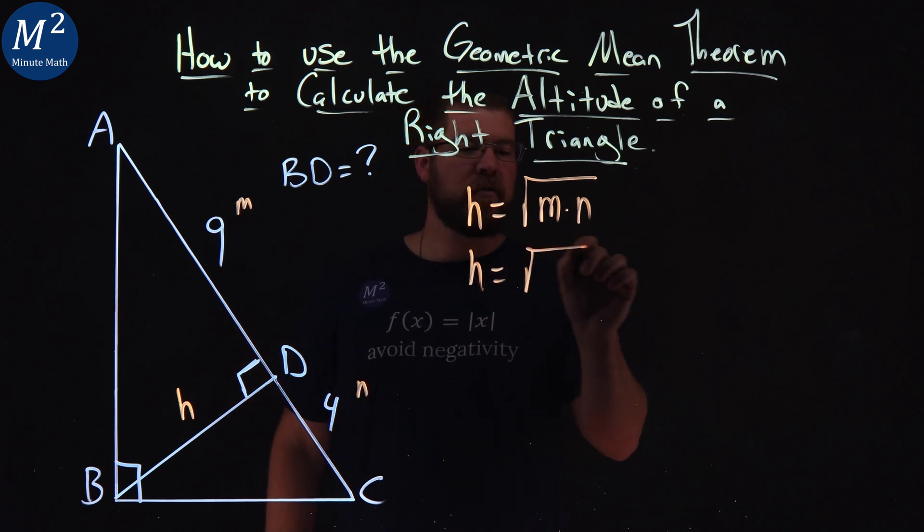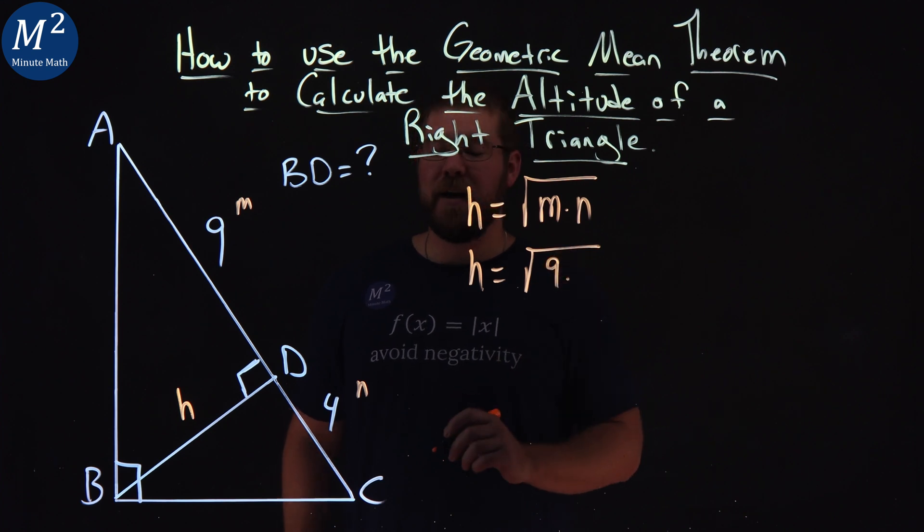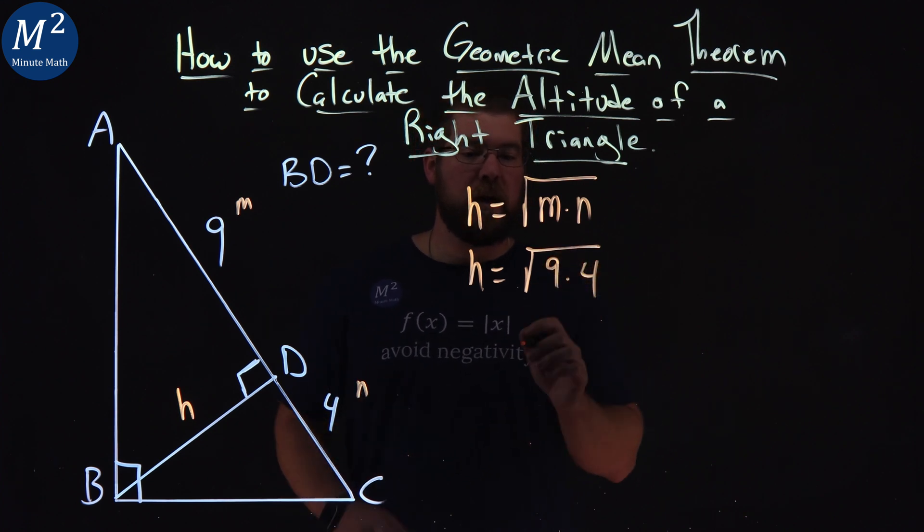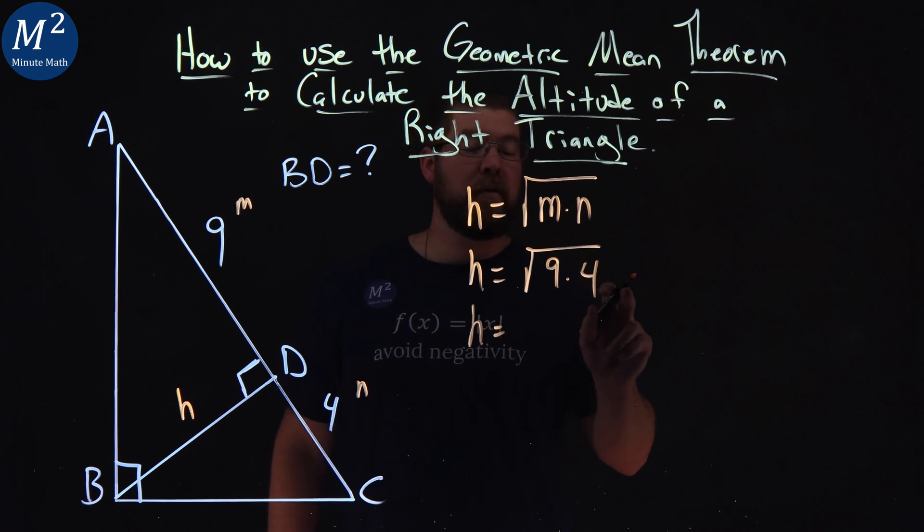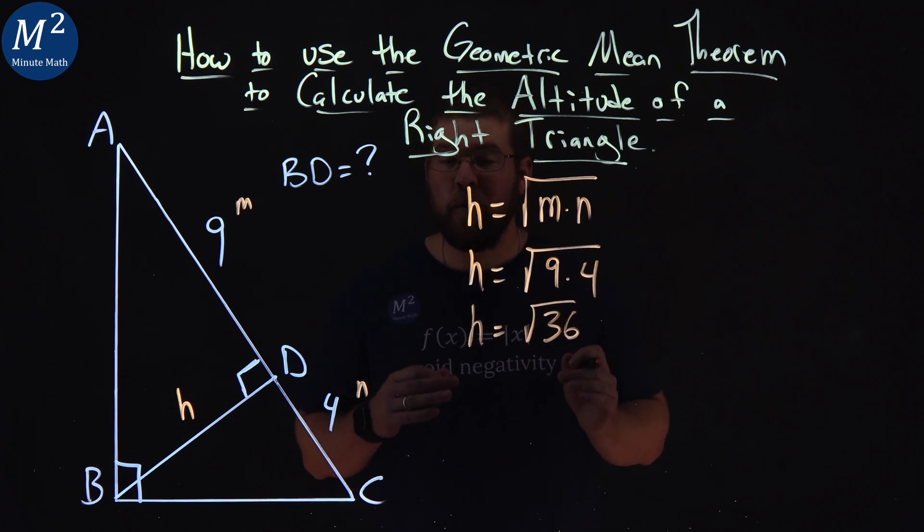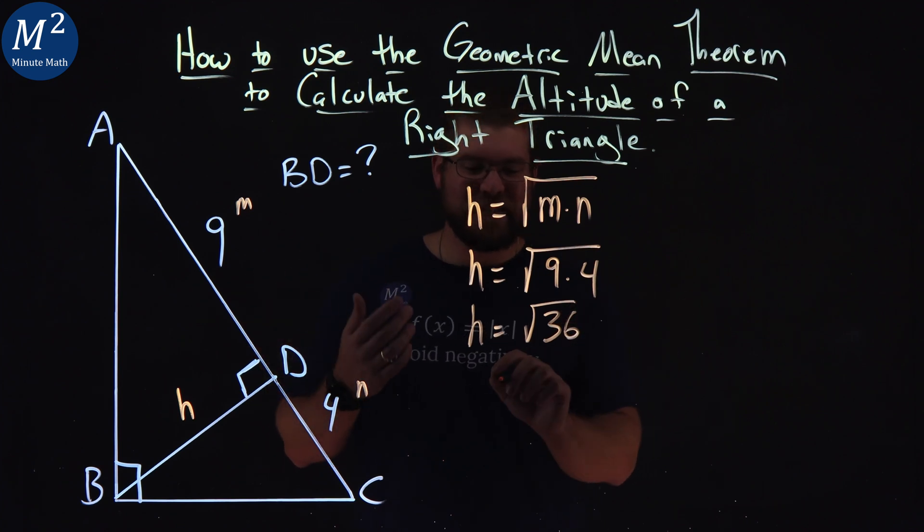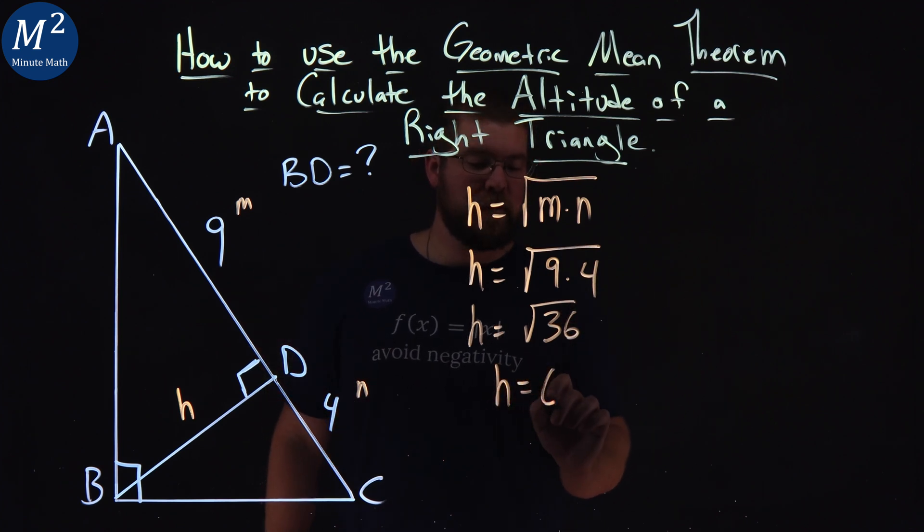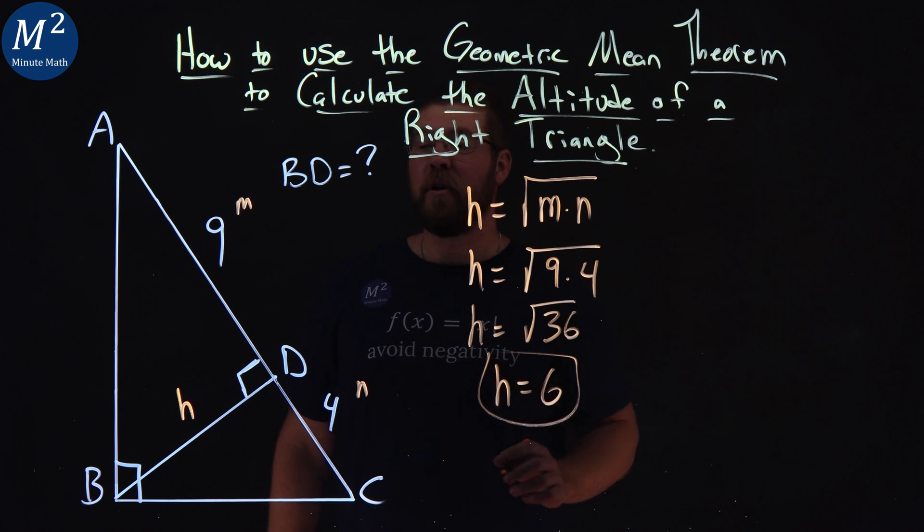h equals the square root of m 9 n 4. Multiply that out. h equals square root of 9 times 4 is the square root of 36. And the square root of 36 is just 6. So h equals 6 right here. And that is our altitude.